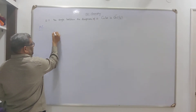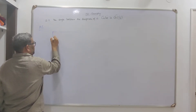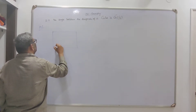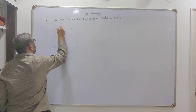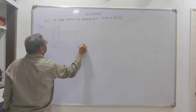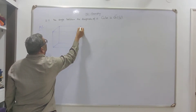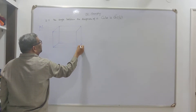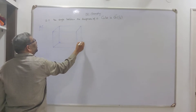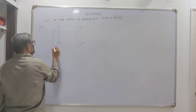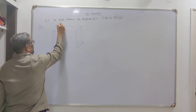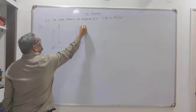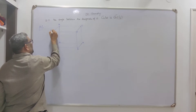I will take the cube first. This is O. This is A. This is B along the y-axis. This is along the x-axis. This is C. This is D. This is E, this is F, and this is G.